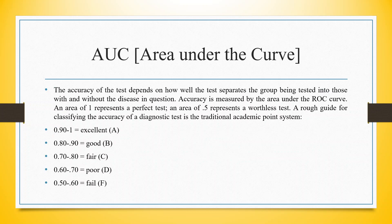The accuracy of the test depends on how well it separates the group being tested into those with and without the condition. Accuracy is measured by the area under the ROC curve. An area of 0.5 represents a worthless test — that is, the model's probability is 50-50%. So if you are making a model whose classification accuracy is less than 50%, there is no point. We want a model whose accuracy is more than the nature's probability: 0.9 to 1 is excellent, 0.8 to 0.9 is good, 0.7 to 0.8 is fair, 0.6 to 0.7 is poor, and 0.5 to 0.6 means the model is failing.